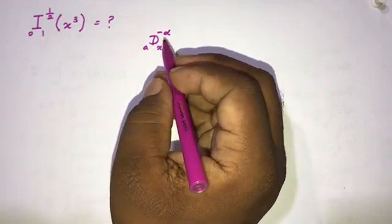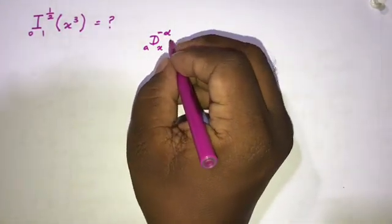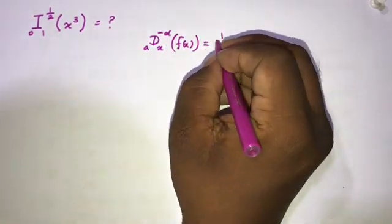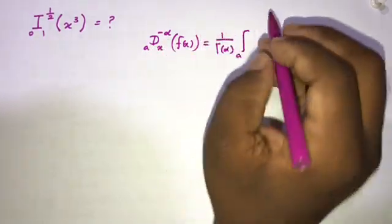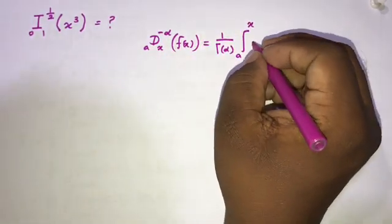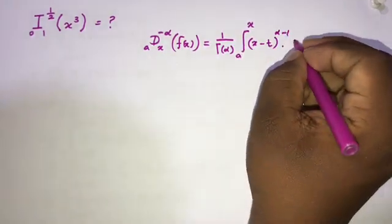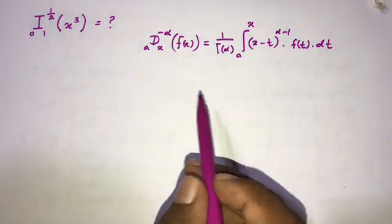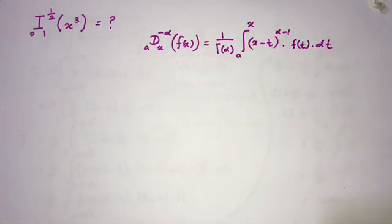Since d means differentiation, the inverse process is integration. So this is equal to f of x, which equals 1 over gamma of alpha, times the integral from a to x of (x minus t) to the power (alpha minus 1) times f of t dt. This is the general formula of Riemann-Liouville fractional integration.